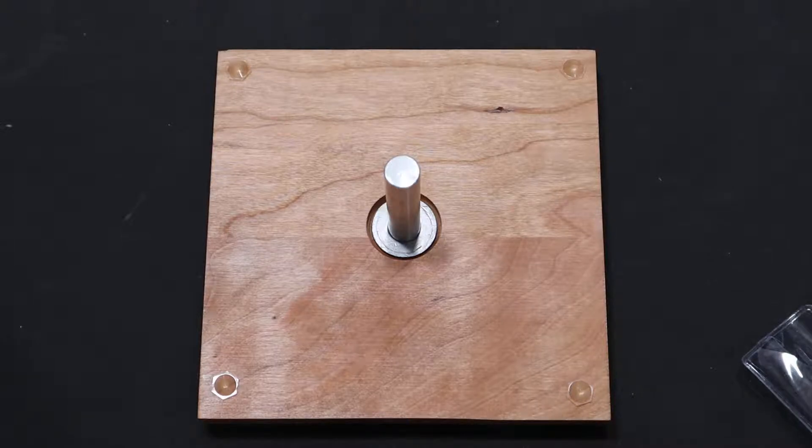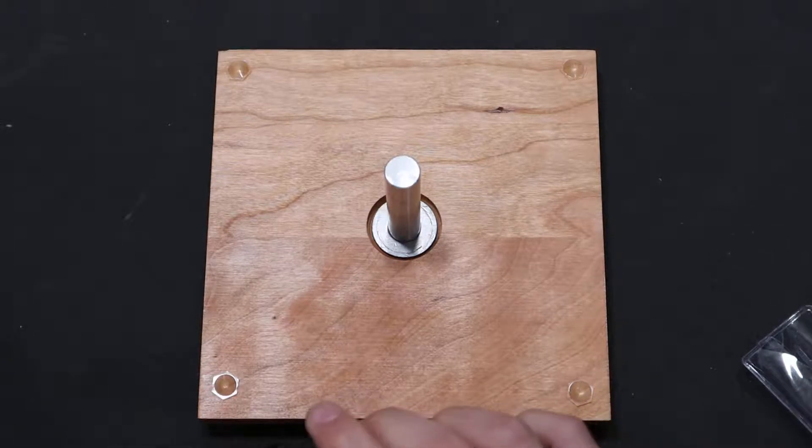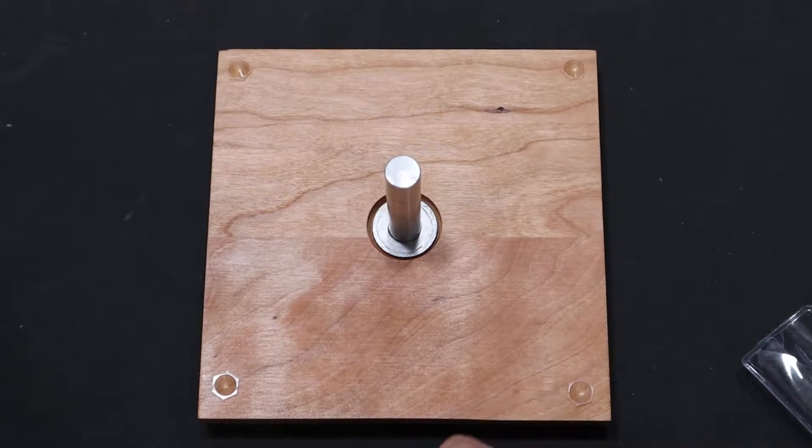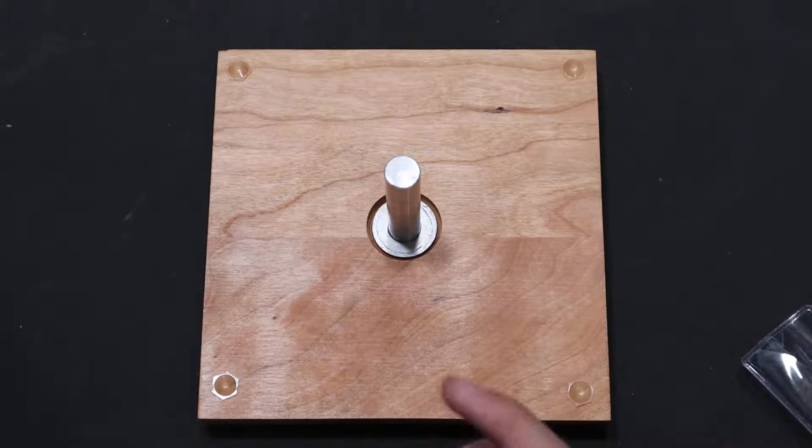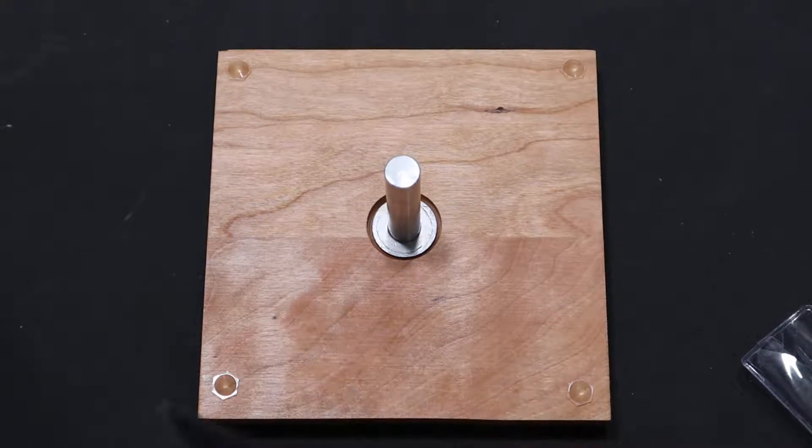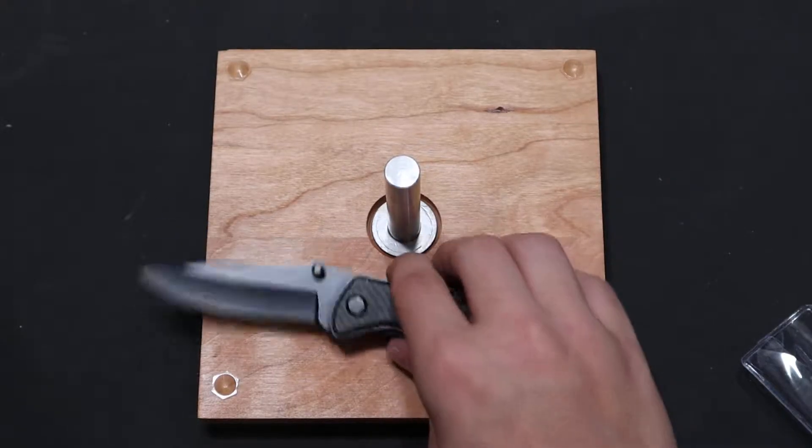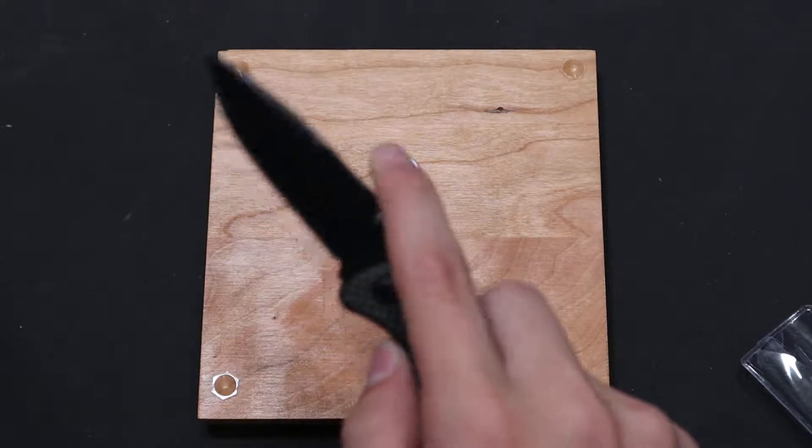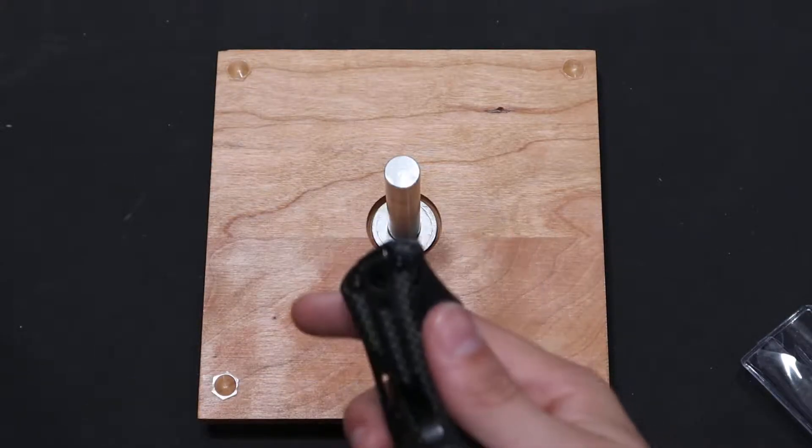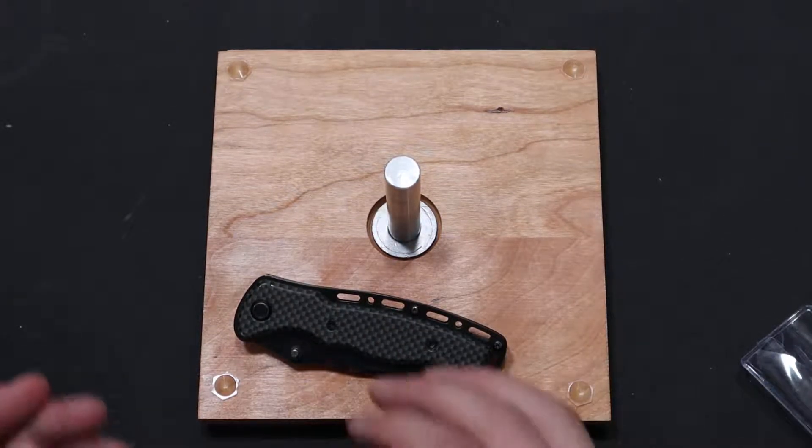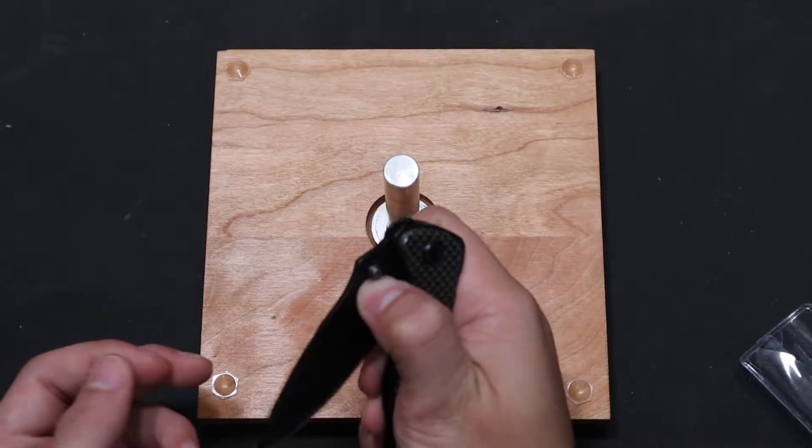So you guys are gonna be seeing the journey of me learning how to sharpen and use the system, and you guys can find out and learn from the mistakes I make so you won't make them. But that's gonna be the first knife I sharpen, or another Ozark Trail knife, just a cheapo Ozark Trail knife, three dollars and like 80 cents or something. Really soft steel so it'll be easy to sharpen.